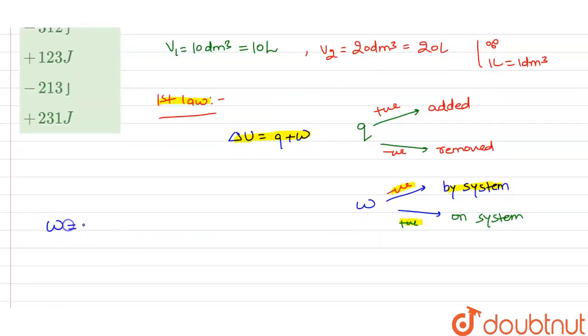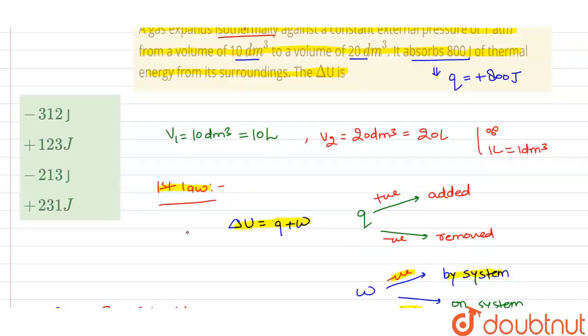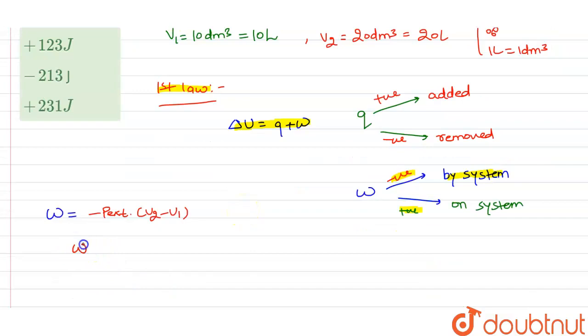For this we have to use the formula. We know that the work done is equal to minus P external times (V2 minus V1). Here P is given 1 atm, so work done will be minus 1 atm. Here V2 is given 20 liter and V1 is given 10 liter.